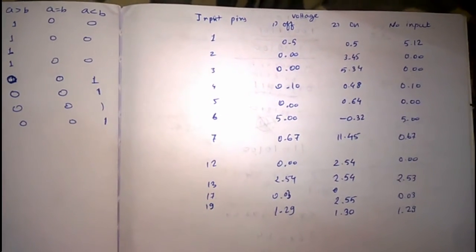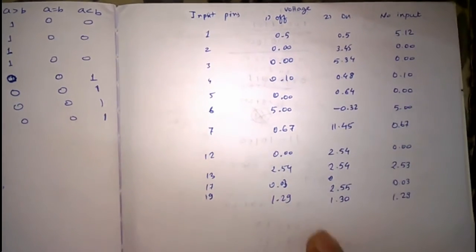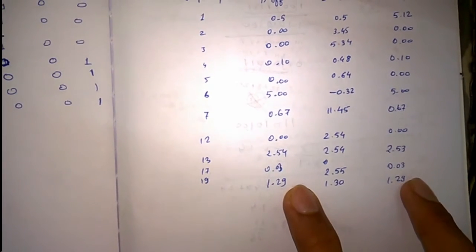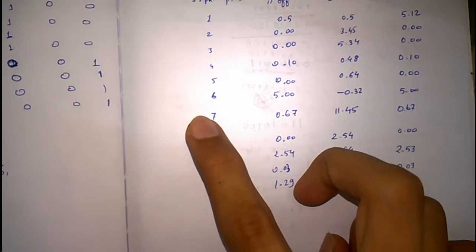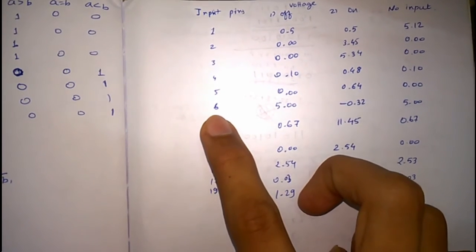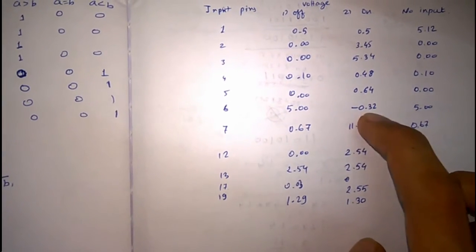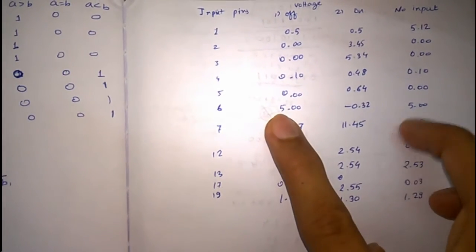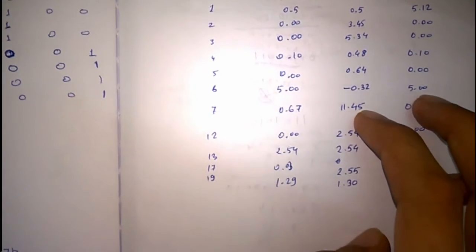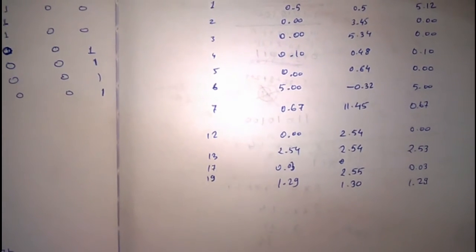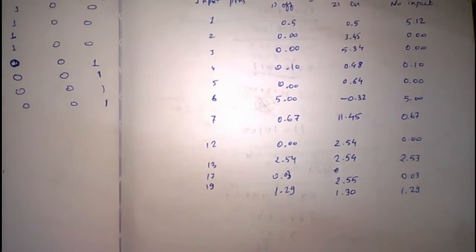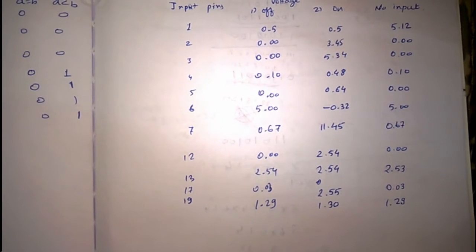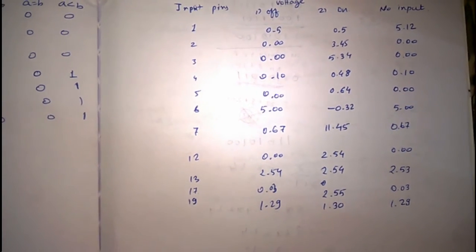In my case, the off column and the no input column didn't give much of a hint. But the on column for the sixth pin, it dropped to minus 0.32 when it was on. When it was off or when there was no input, it was around 5.0 volts. I thought there might be some problem with the sixth pin. So let us go take a look at the datasheet, what does the sixth pin exactly do.